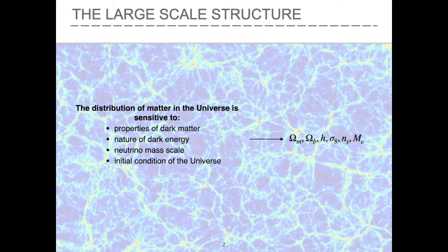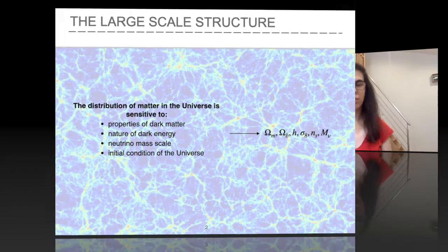The distribution of matter and galaxies in the universe can inform us about the properties of dark matter and dark energy, the neutrino mass scale, and the initial conditions of the universe. All this information is described by few cosmological parameters. Studying cosmology directly at the galaxy field level is very challenging, so summary statistics are used to describe the galaxy field and to perform the cosmological analysis in galaxy surveys. What are the best statistics to retrieve the information from the large-scale structure?